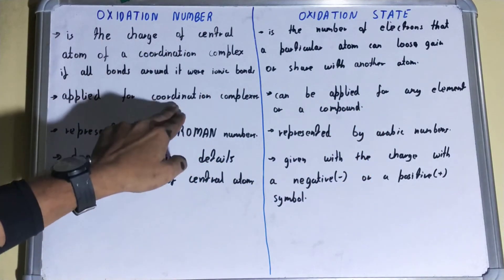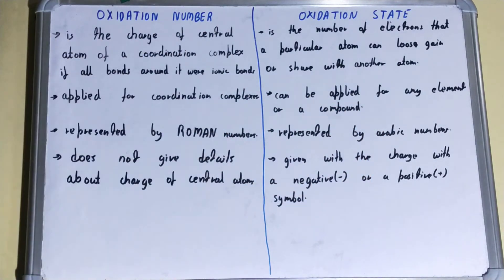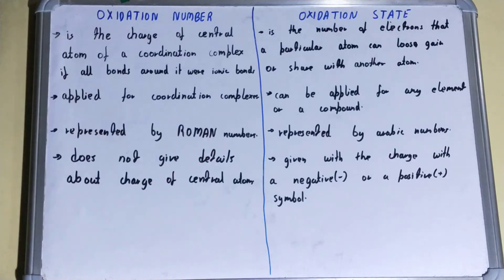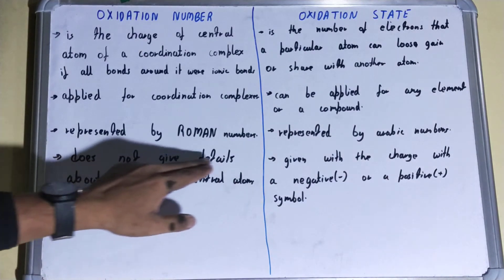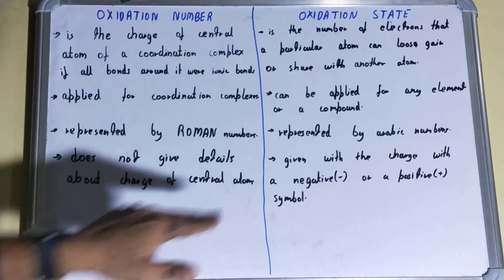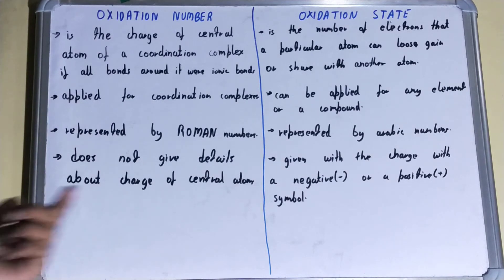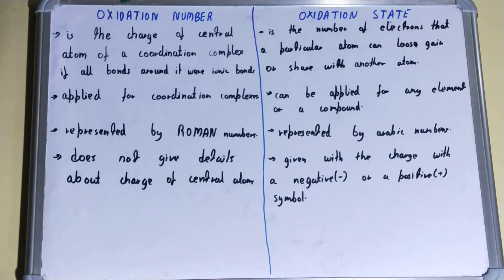Oxidation number is specific to coordination complexes only. Next, if we talk about the representation, oxidation number can be represented by Roman numerals, whereas oxidation state can be represented by Arabic numbers. Also, oxidation number does not give details about the sign of the charge on the central atom — it only tells us the number but doesn't indicate whether it is a positive or negative charge.